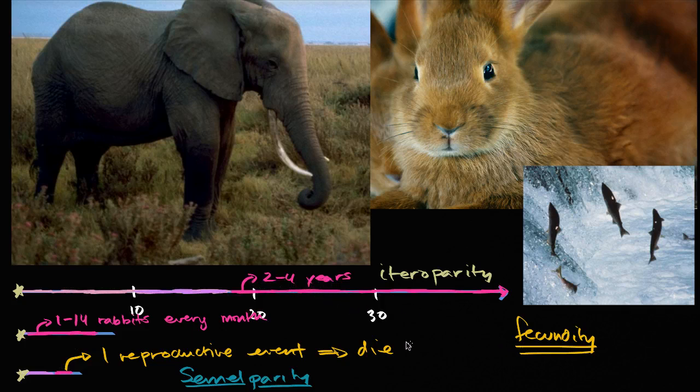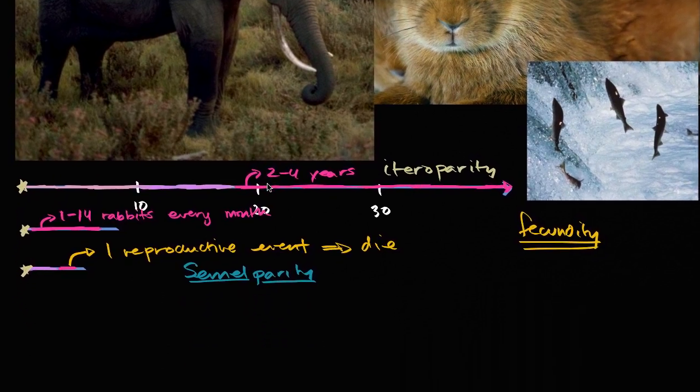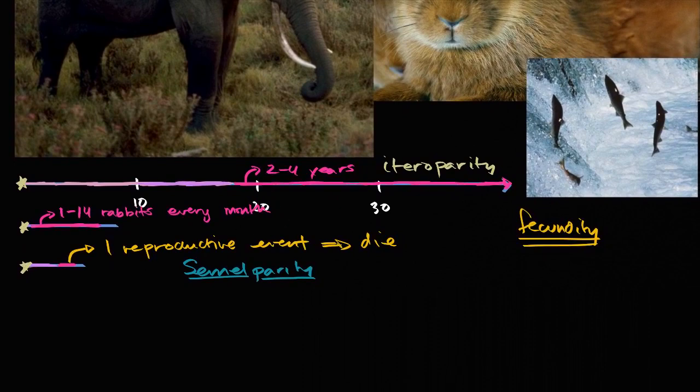these very different reproduction rates, this variation in fecundity, sometimes iteroparity, sometimes semelparity? And it is a bit of, it's not a mystery. People are studying this, and they have good hypotheses, but we don't know for sure, especially from species to species.